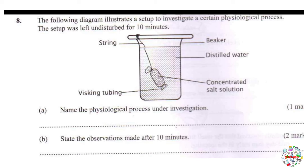Whenever you see two solutions separated by a semipermeable membrane, you don't even have to think about it — this is testing osmosis. So the physiological process under investigation is osmosis. Part B: state the observation made after 10 minutes. When it comes to osmosis, there are three things to keep in mind: the differences in concentration, the flow of water, and the net effect.